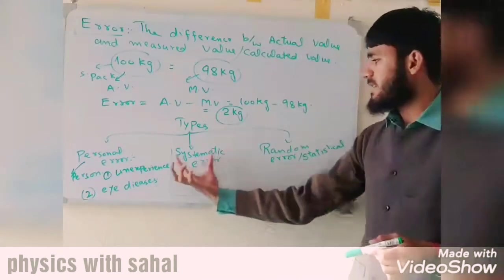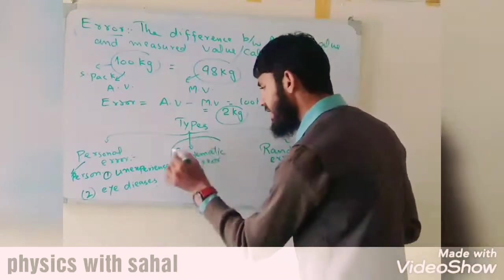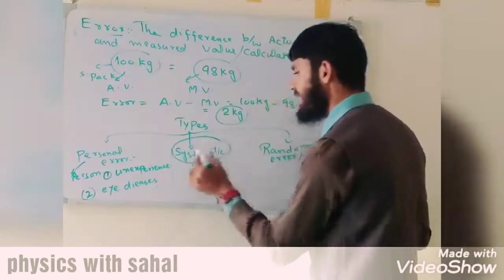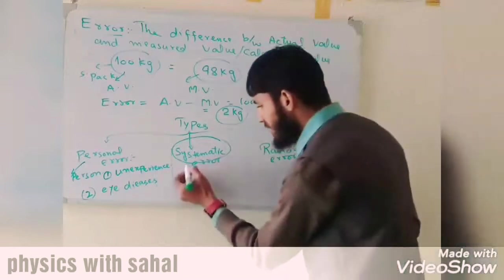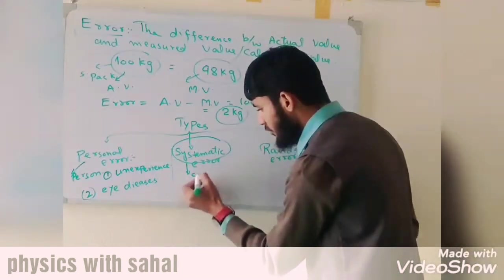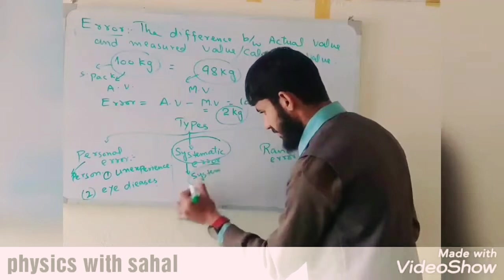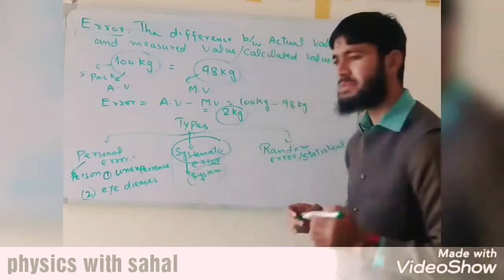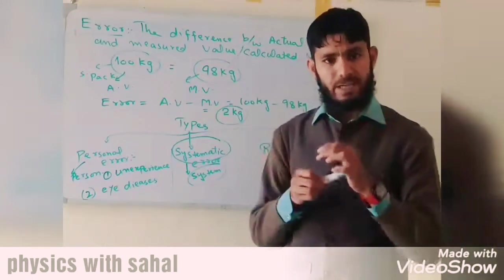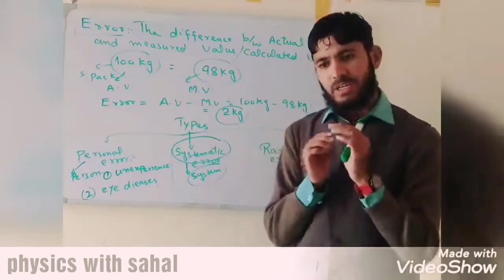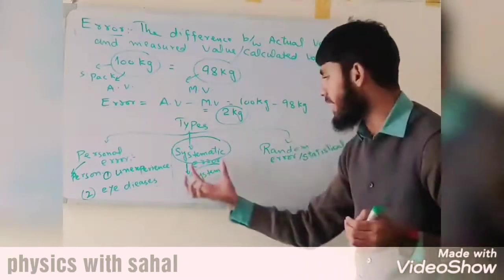The second type of error is systematic error. Systematic error is clear from its name — it is the error which arises in a measurement due to the system. Sometimes there is a fault or something wrong in the system, which causes a systematic error.